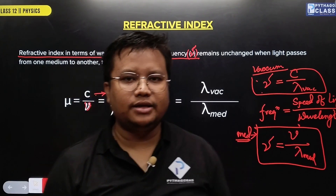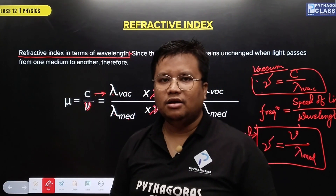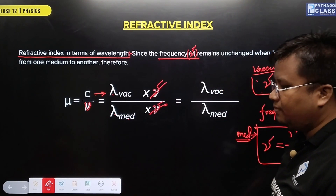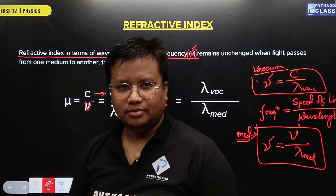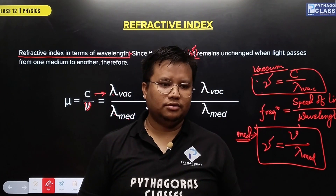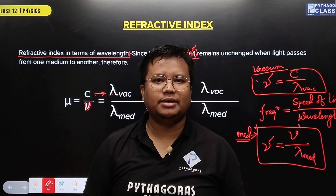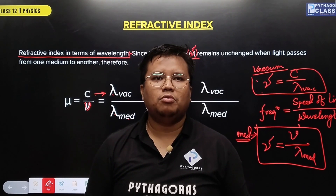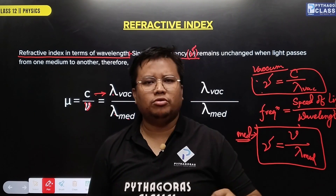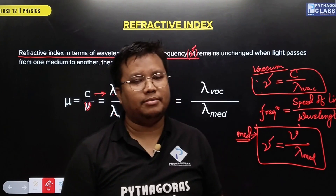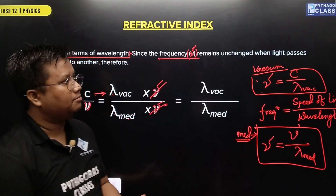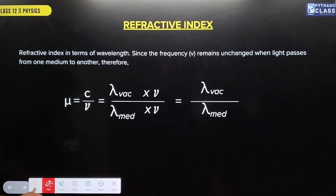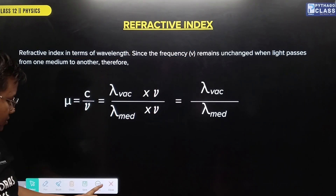The refractive index also defines the ratio of the wavelength in vacuum to the wavelength in the medium. This gives the refractive index in terms of wavelength.